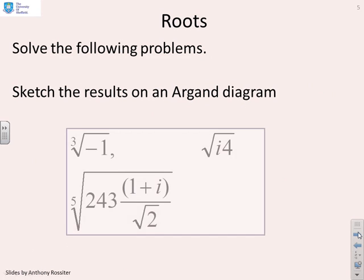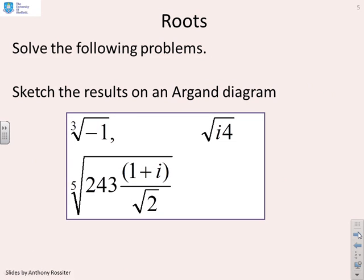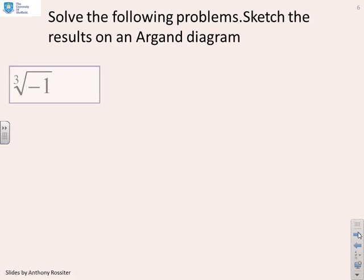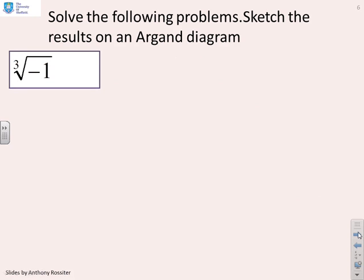Next question then. We want you to solve for the roots of the following problems. So you want the cube root of minus 1, the square root of 4i, and the fifth root of 243 times 1 plus i over root 2. So as before, now is the time to pause. Try these by yourselves before you look at the solutions that I provide. First then, the cube root of minus 1.